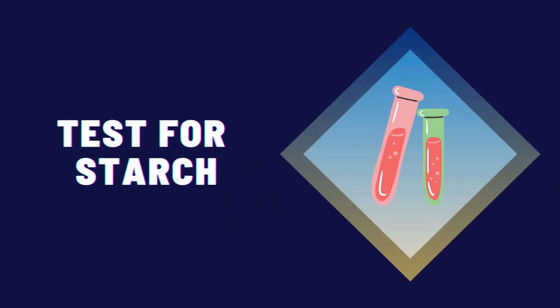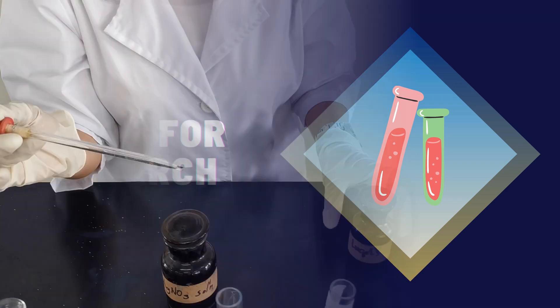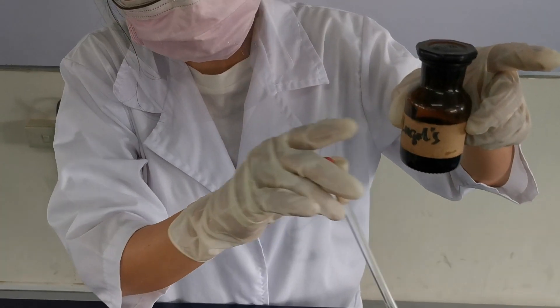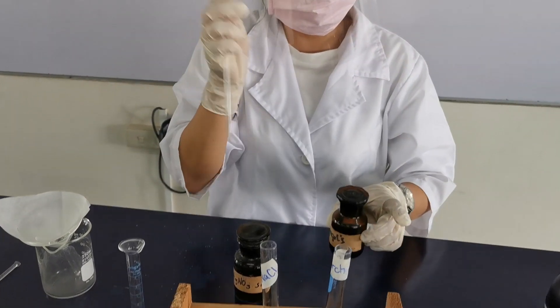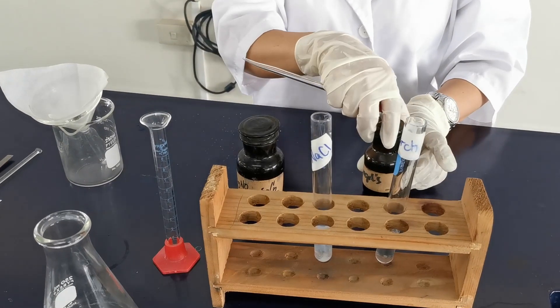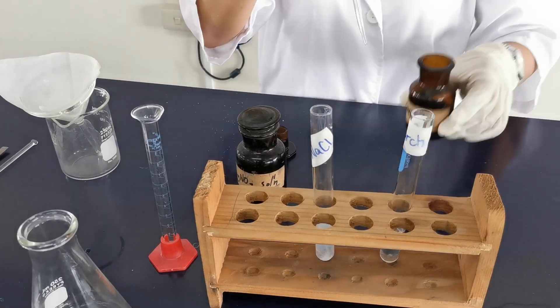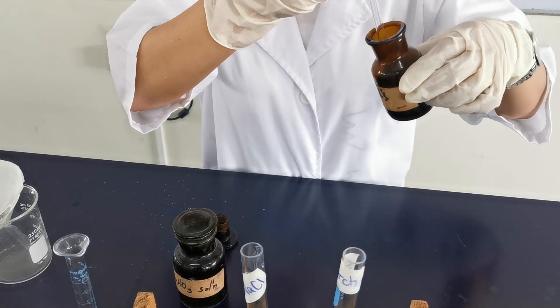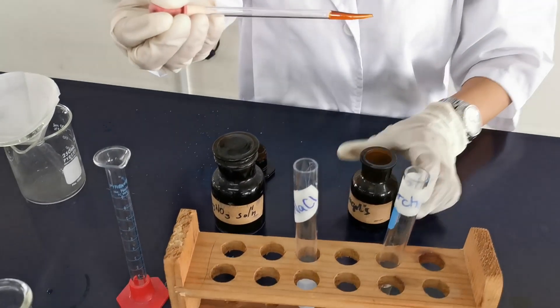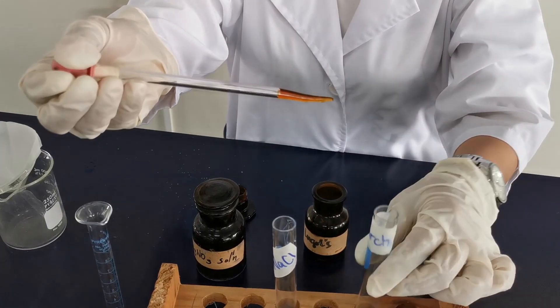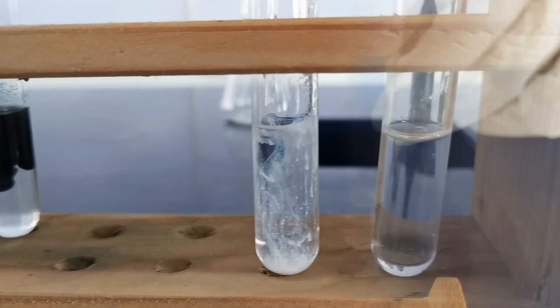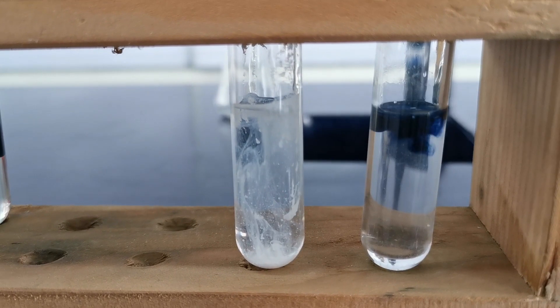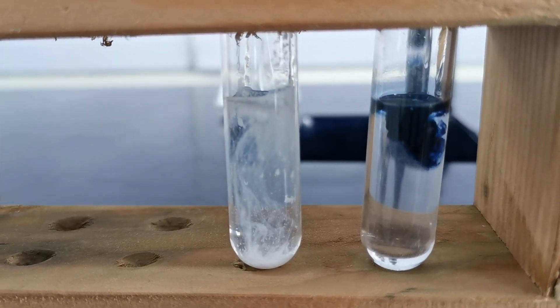Next, is the test for starch. We get 5 ml of the filtrate and placed it in a clean test tube. We add 10 drops of Lugol's iodine solution. Blue-black color indicates the presence of starch.